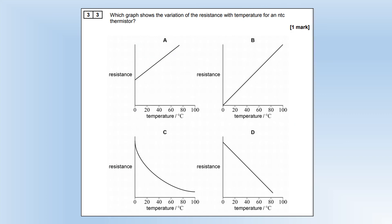Which graph shows the variation of resistance with temperature for an NTC thermistor? Temperature and resistance are inversely proportional, so that's graph C.